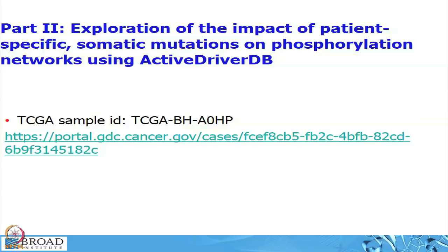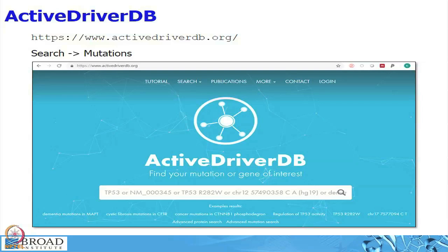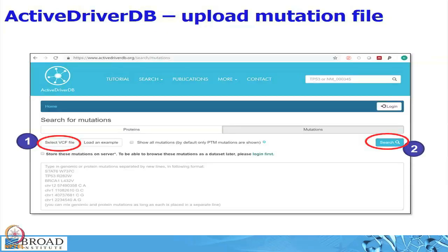I want to briefly touch on what was planned for the second part, which may not happen because the website is down. We wanted to use a mutation tool for one particular TCGA sample to show how you would operate it — you click Search Mutations and upload your VCF file. The VCF file is a standard data format. Depending on the pipeline you use to call variants, you will get a VCF file.